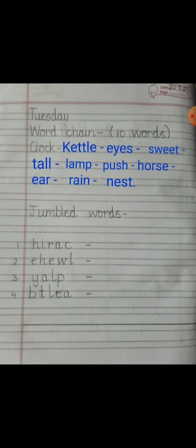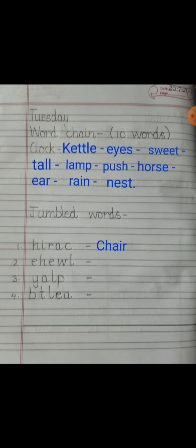Now children, try to unjumble the letters given below and write the correct spelling. Number one is H-I-R-A-C — put a small dash and now try to write the correct spelling. The correct spelling is C-H-A-I-R, 'chair'. Let's see the next one: E-H-E-W-L, and the correct word is W-H-E-E-L, 'wheel'.